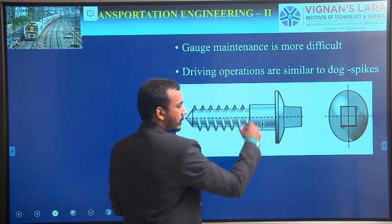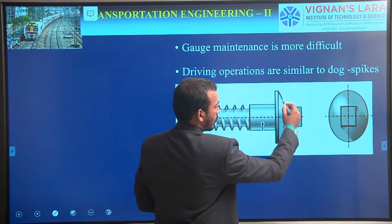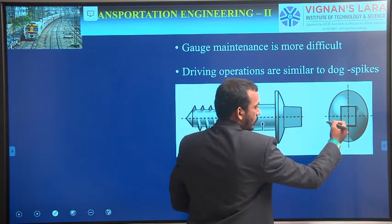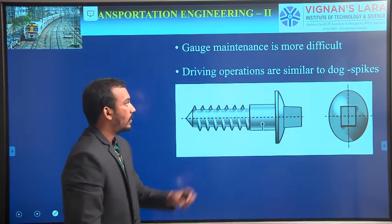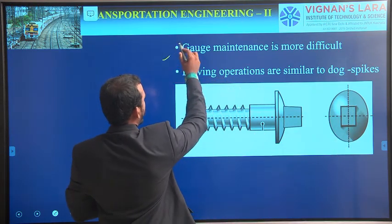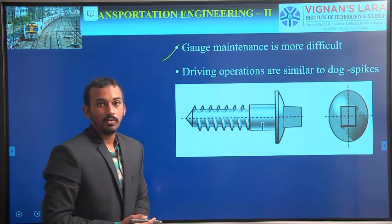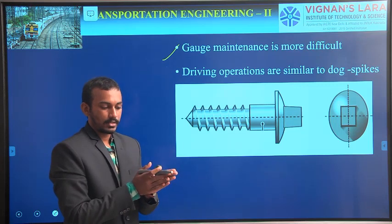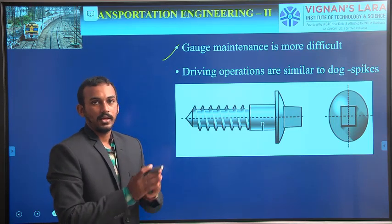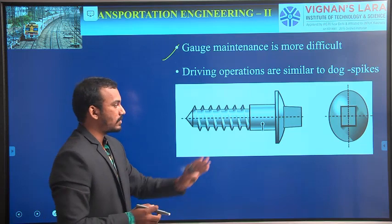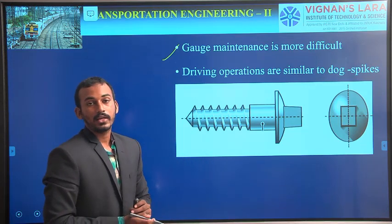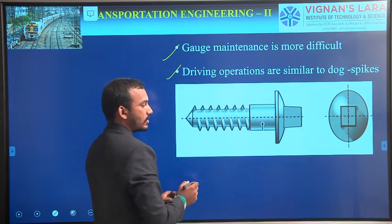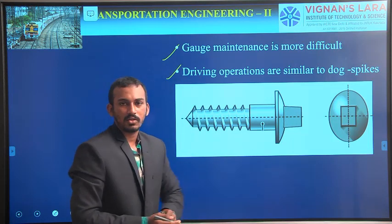The screw spike has a circular cross section with a square projection. This is the cross view. These are better but gauge maintenance is more difficult. Why? As we are inserting them through the sleeper, it may not be in a straight alignment and may deviate. So that's why it is very difficult to maintain the gauge using screw spikes.